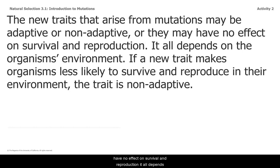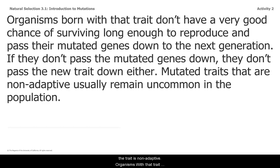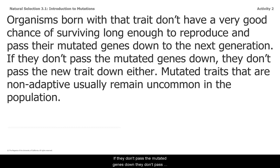It all depends on the organism's environment. If a new trait makes organisms less likely to survive and reproduce in their environment, the trait is non-adaptive. Organisms with that trait don't have a very good chance of surviving long enough to reproduce and pass their mutated genes down to the next generation. If they don't pass the mutated genes down, they don't pass the new trait down either. Mutated traits that are non-adaptive usually remain uncommon in the population.